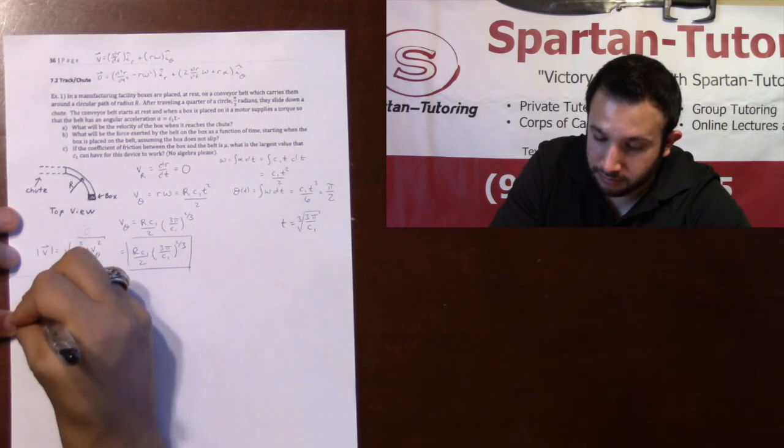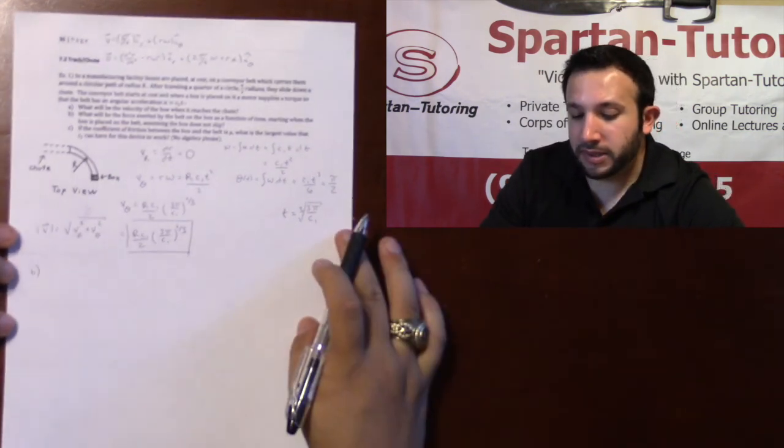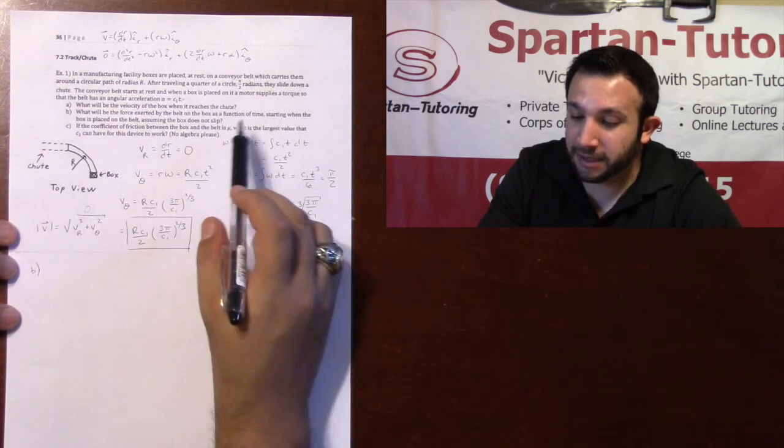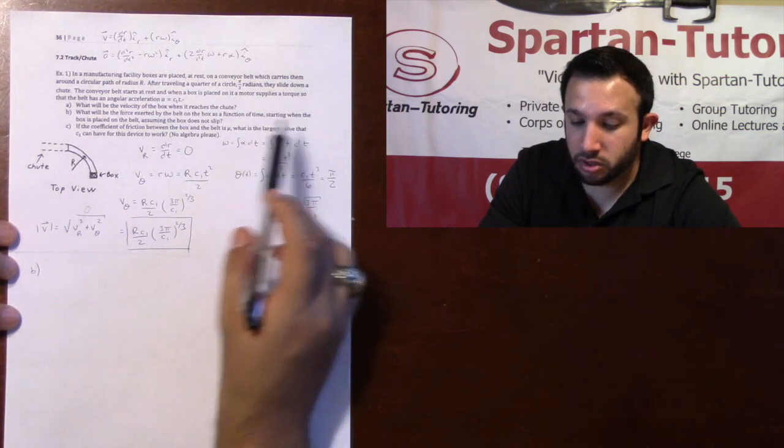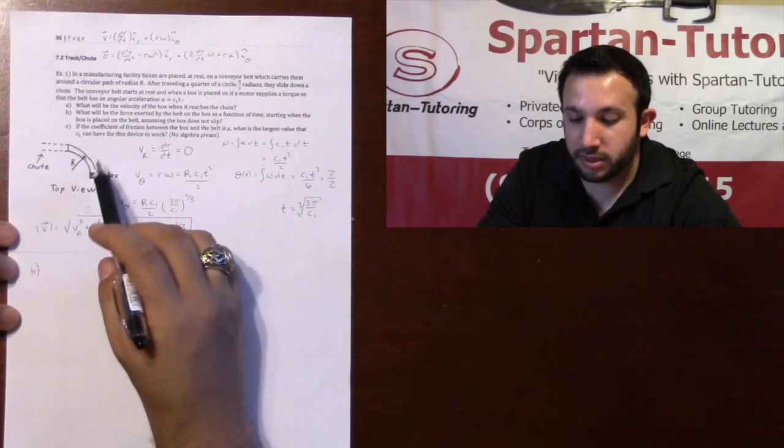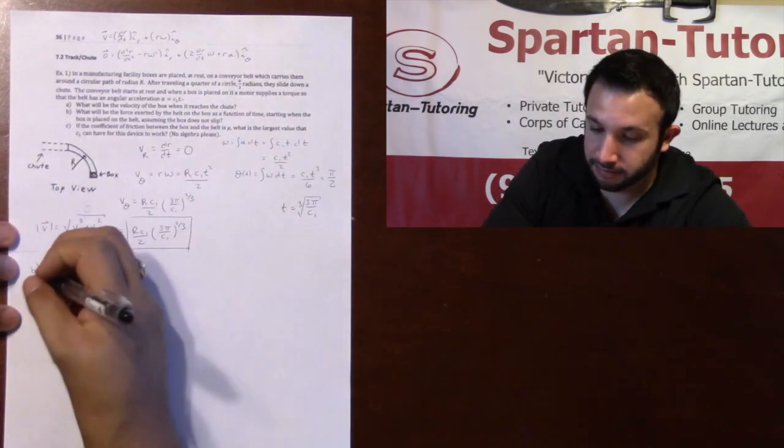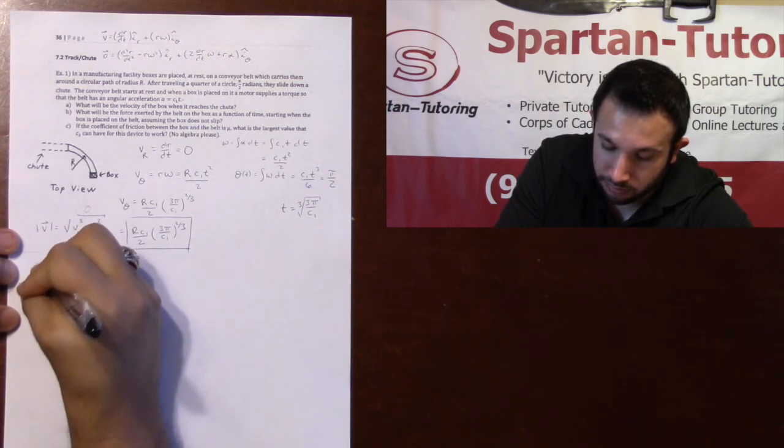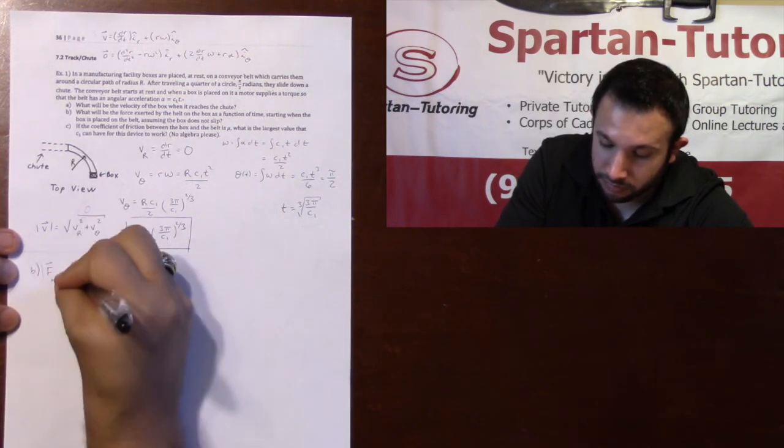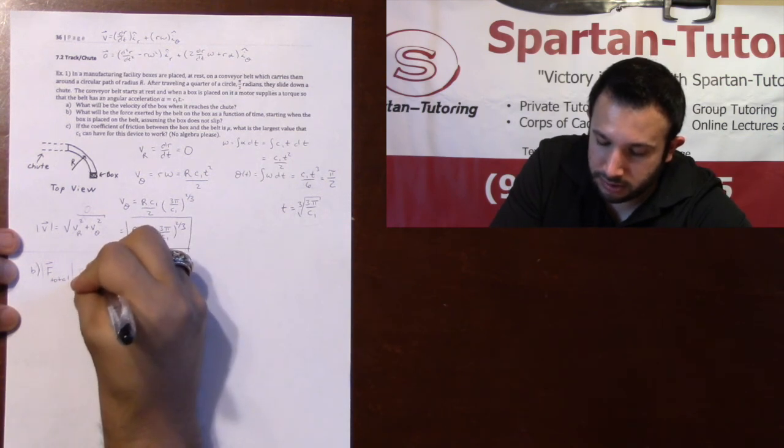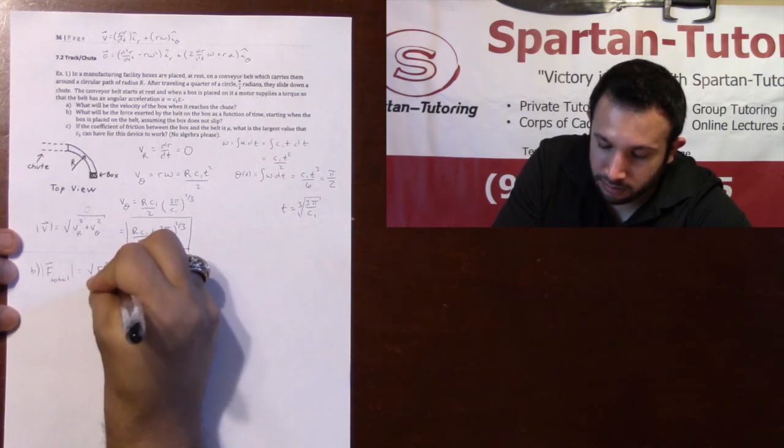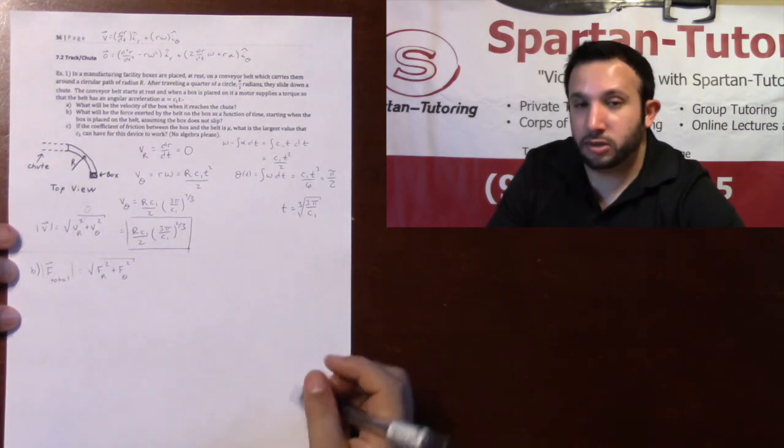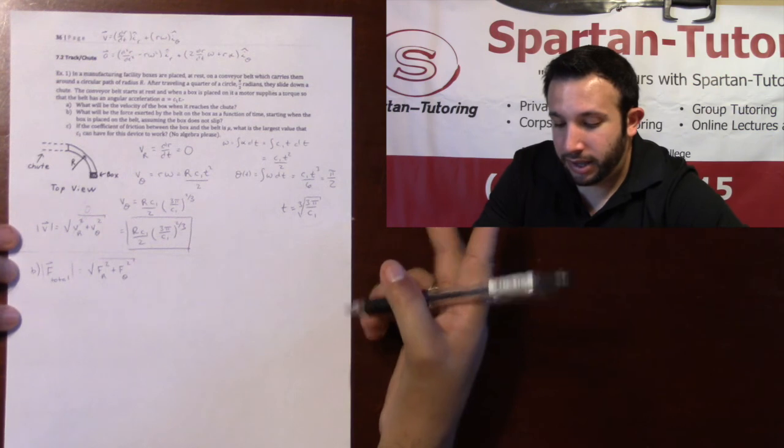Let's take a look at part b. Part b says, what will be the force exerted on the belt on a box as a function of time starting when the box is placed on the belt, assuming the box does not slip? If you want your total force, the magnitude of f total is going to be the square root of fr squared plus fθ squared. So I've got to find fr and fθ.